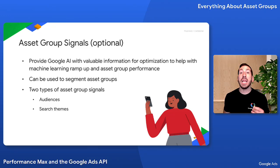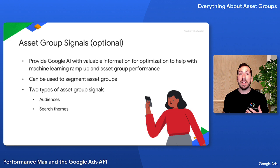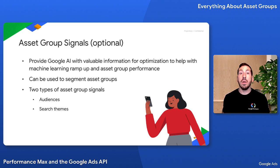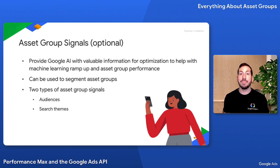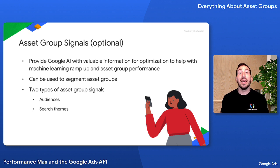Asset group signals allow you to provide Google AI with valuable information to learn faster, which can help asset group performance. Asset group signals are optional but can provide performance maps with important signals for optimization to help with machine learning ramp up. The Google Ads API currently supports two types of asset group signals.